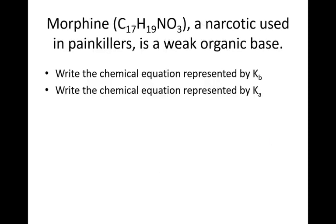So let's practice. A good example of a weak base is morphine, which as you've probably heard of it before, a narcotic that's used in painkillers. It's also a weak organic base. So let's write the chemical equation represented by KB. To write the KB expression we start with our base which we said is morphine, so that'll be C17H19NO3, and we'll find out that it's that N that picks up a proton, accepts a proton, so that this is a base.